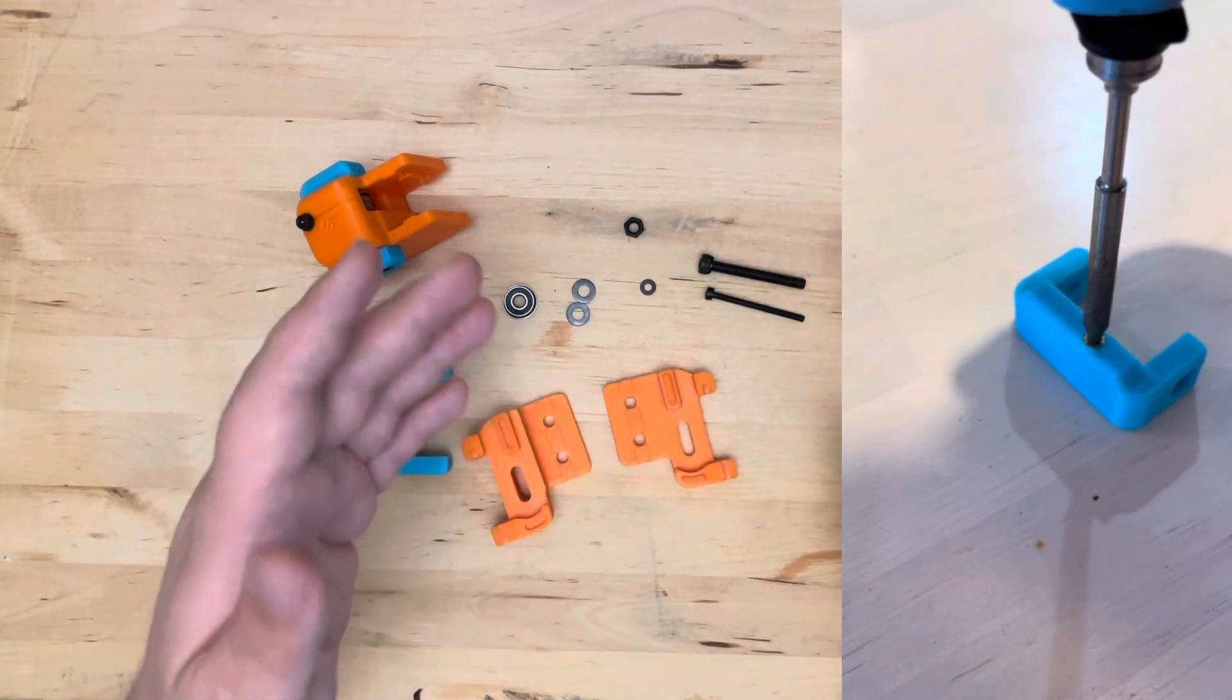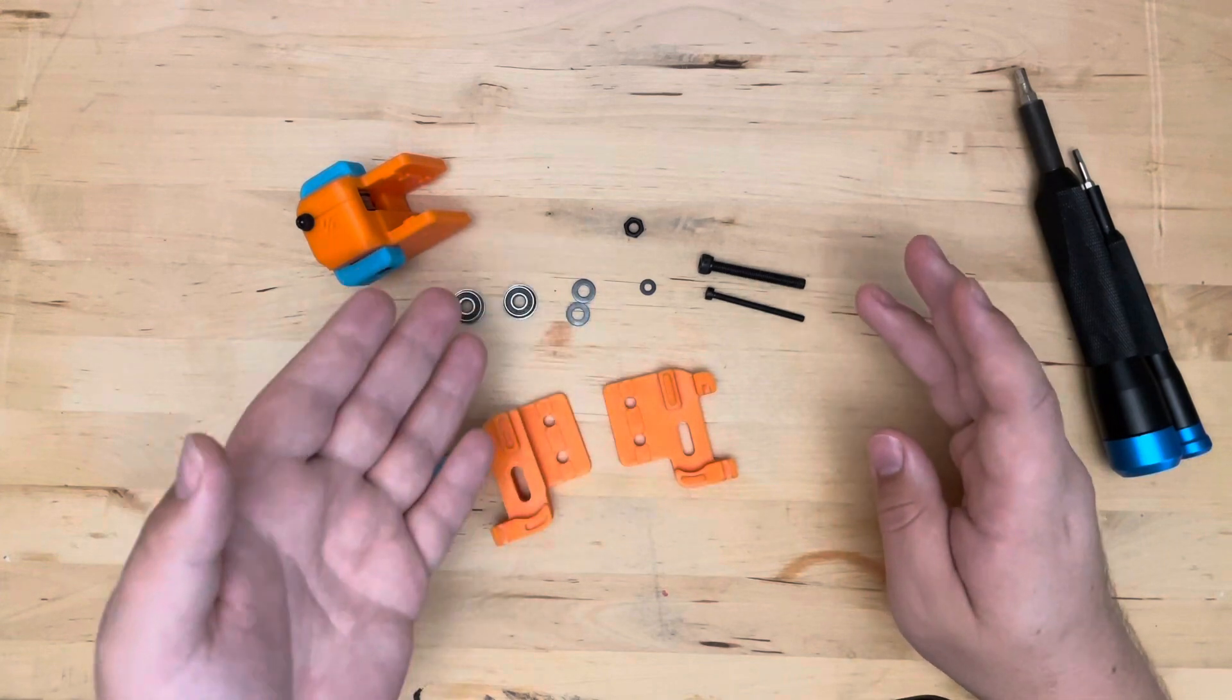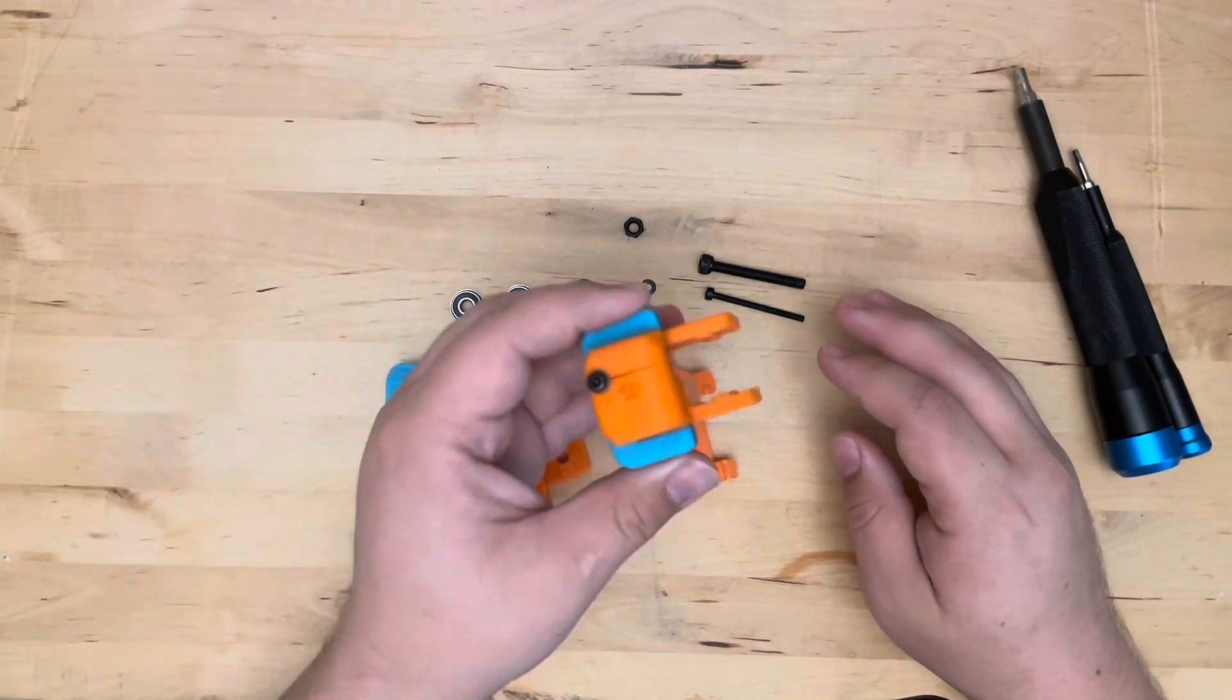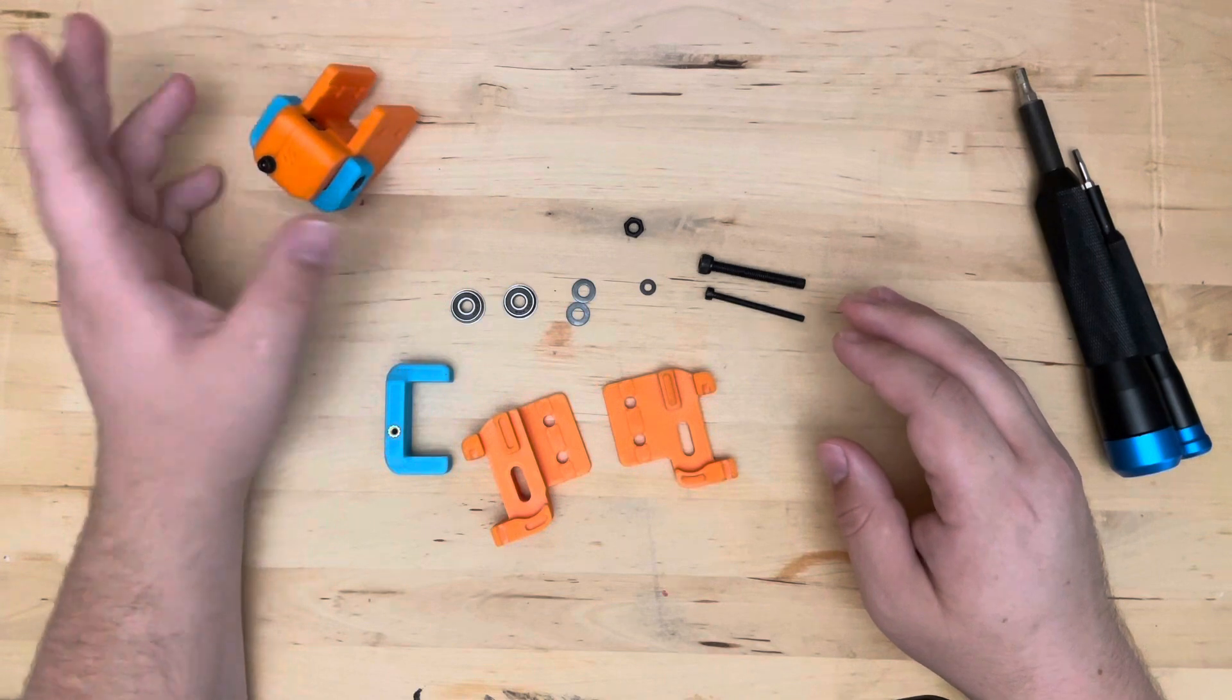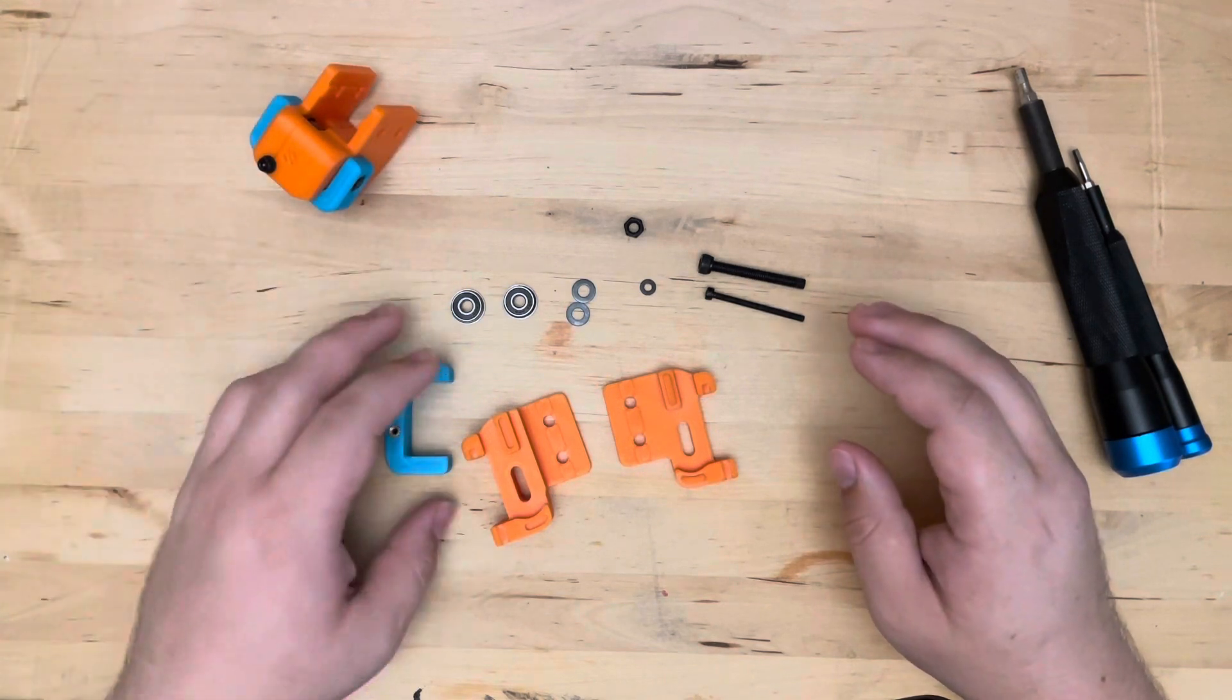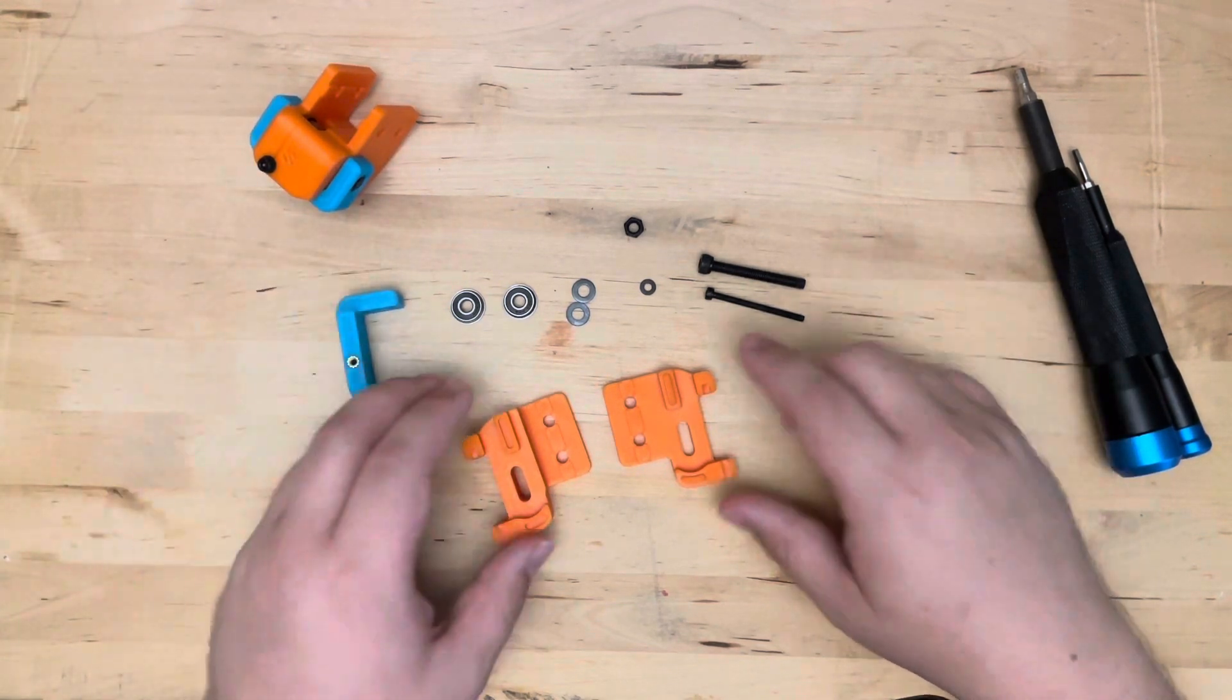Obviously, for these parts, the hardware I should clarify, they are duplicated for the second tensioner idler combo. So, let's get started with the assembly.